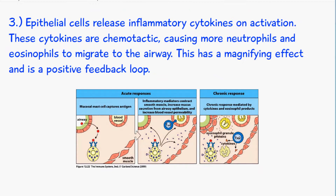The epithelial lining of the airways also releases inflammatory cytokines once activated. These cytokines are chemotactic, which means they invite or attract more neutrophils and more eosinophils to migrate to the airways, and the effect of this is a magnifying effect. The same processes previously mentioned are magnified because more neutrophils, eosinophils, and inflammatory mediators are being brought into the airway because of this initial allergen response, and the overall result causes damage to the airways.